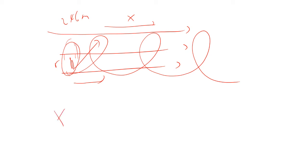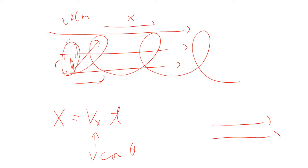It goes some distance x equal to the x-velocity times time. The x-velocity is going to be v cosθ — that's the component along the magnetic field direction.